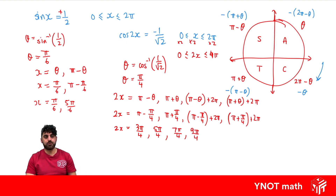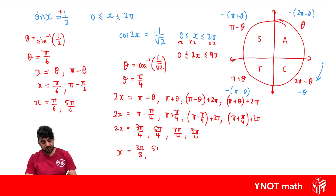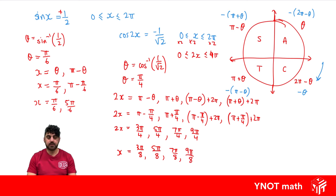Finally, to solve for x we divide everything by 2, giving us x equals 3 pi on 8, 5 pi on 8, 7 pi on 8, and 9 pi on 8 as the final answers.